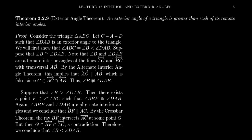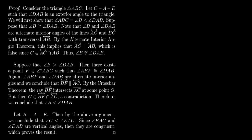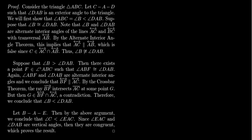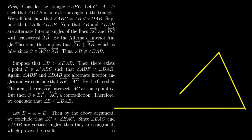Even though this statement makes sense for any order geometry, we can only guarantee it's true in a congruence geometry because of the alternate interior angle theorem. Let's redraw the picture. We have a triangle with an extended line: point A, point D, point C, and point B. Point A is between points C and D, and angle D, A, B is an exterior angle to the triangle.